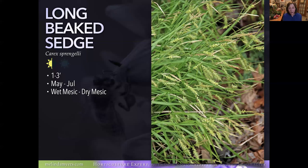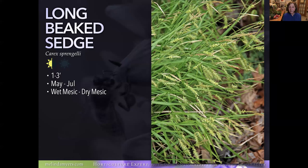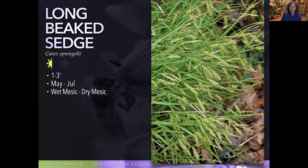Long Beaked Sedge has the potential to reseed readily — Prairie Nursery's Neil Diboll describes it that way and says it's one to keep an eye on. It takes wet to dry, so it's adaptable in any part of your rain garden. Those grass-like leaves really add unity; mix it in with some other reseeders like Monarda, Rudbeckia, or Heliopsis — early sunflower — and they can duke it out and really find their way to create a beautiful landscape.